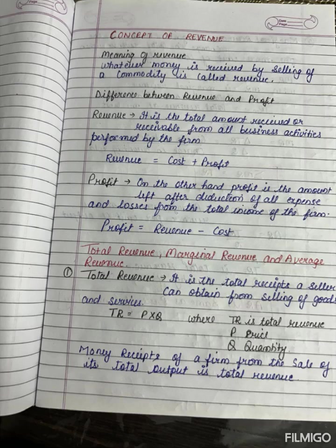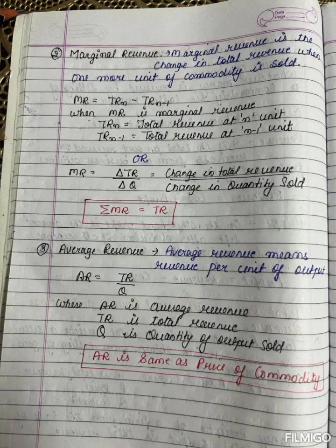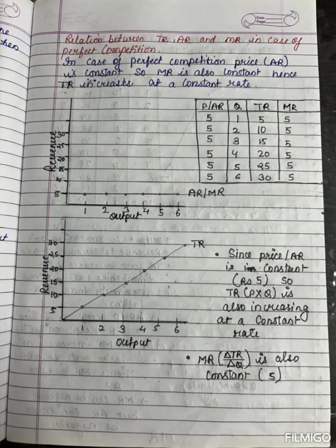Revenue is the money received from the sale of a commodity, or cost plus profit. Total revenue is price into quantity, or the summation of marginal revenue. Marginal revenue is the change in total revenue divided by the change in quantity sold.